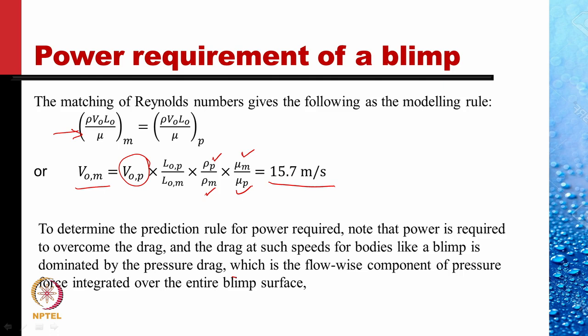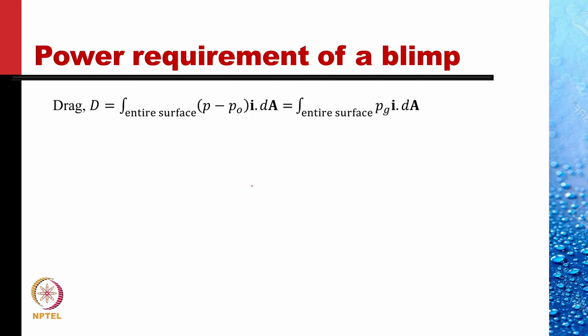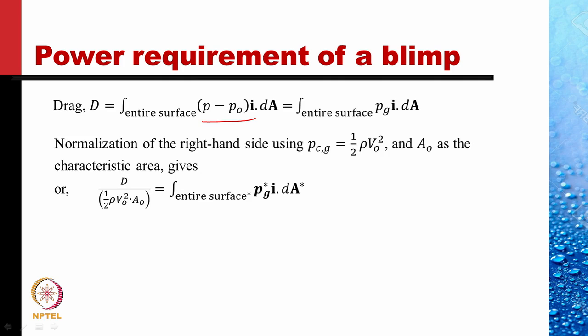To determine the prediction rule for power required, note that the power required is to overcome the drag. The drag at such speeds for bodies like a blimp is dominated by pressure drag, which is the flow-wise component of pressure force integrated over the entire blimp surface. So, the drag D is the integral of the gauge pressure component taken in the flow direction, integrated over the entire surface. Normalizing the right-hand side using the characteristic gauge pressure as one half rho V naught squared and using A naught as the characteristic area, we get drag divided by one half rho V naught squared times A naught equal to this integral over the entire surface.